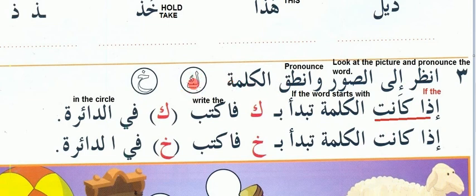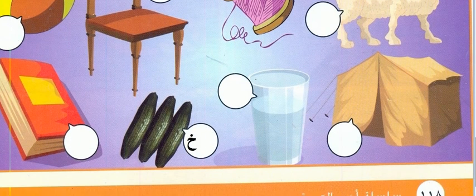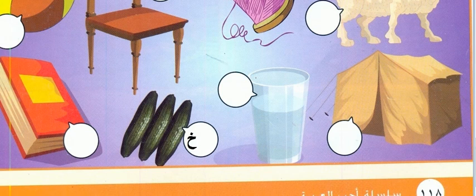There is the Kaaf, there is the Khaf — Khah. If the word is starting with Ba or Ka, write Kaaf in the circle. If the word is starting with the Kaaf — Ba means with. Here they are showing Ba; this is the Ba with the Kaaf in the circle. So these are the words — you have to write what each one is starting with.